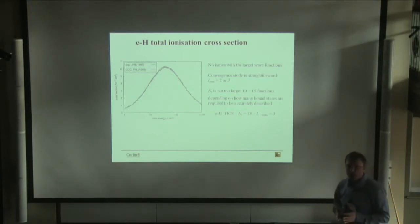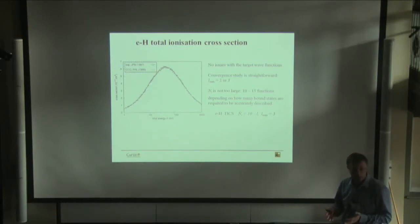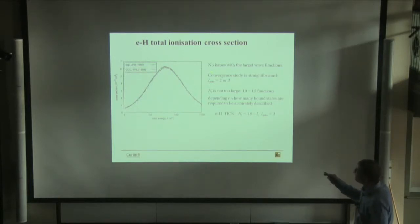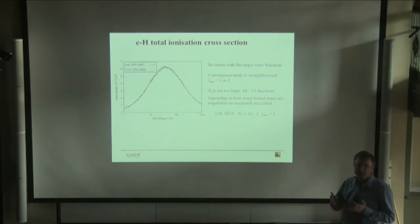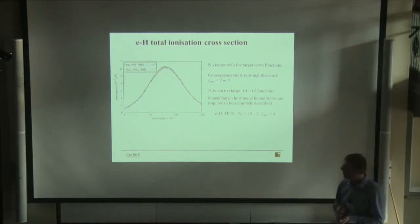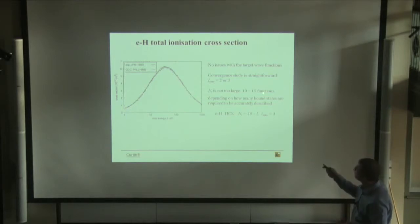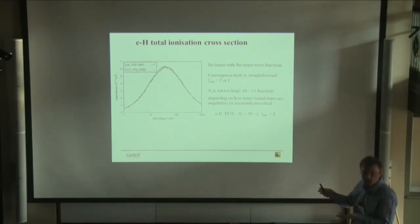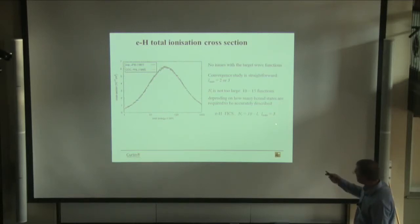Electron scattering from hydrogen is a great test case where we can test how the method works and what is required to obtain convergent results. For scattering from the ground state, normally the expansion of the target state does not need to go too far — 2 or 3 angular momenta is enough if you are interested in total cross-section, total ionization cross-section, and excitation of low-lying states. The number of functions for each L is also not too large, about 10-15. For the total ionization cross-section, a 10-L model with 10 S-states, 9 P-states, and maximum L equal to 3 was enough to obtain very good agreement between theory and experiment.